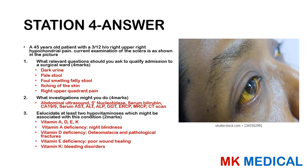The four features pointing to obstructive jaundice are: dark urine attributed to conjugated bilirubin, pale stool because there is no stercobilinogen converted to stercobilin, foul-smelling fatty stool because bile isn't present to emulsify fat, and itchy skin due to deposition of bile salts. Investigations include abdominal ultrasound and blood investigations such as 5'-nucleotidase, serum bilirubin, CA 19/9 if suspecting pancreatic cancer, serum AST and ALT, ALP, and GGT.